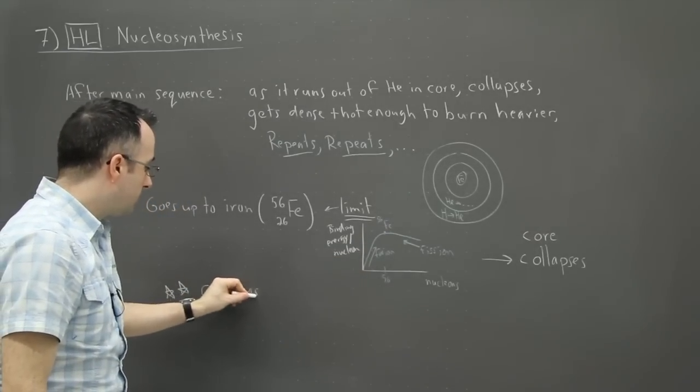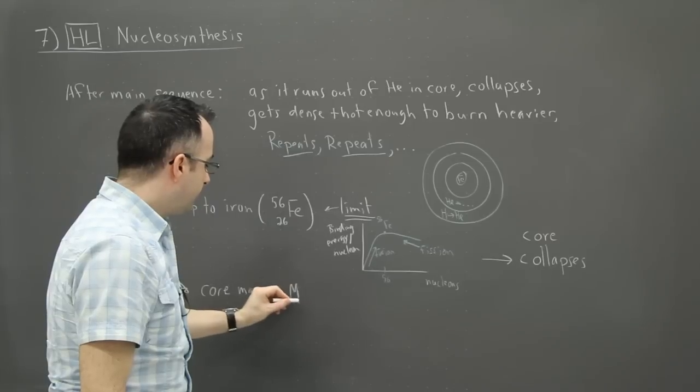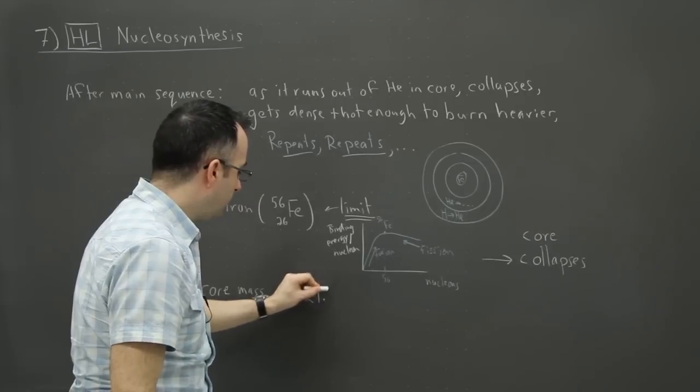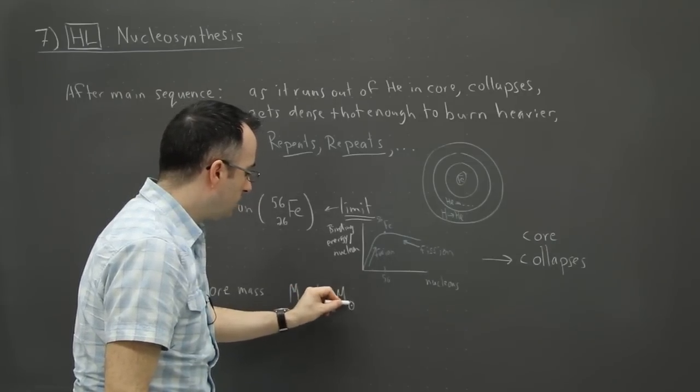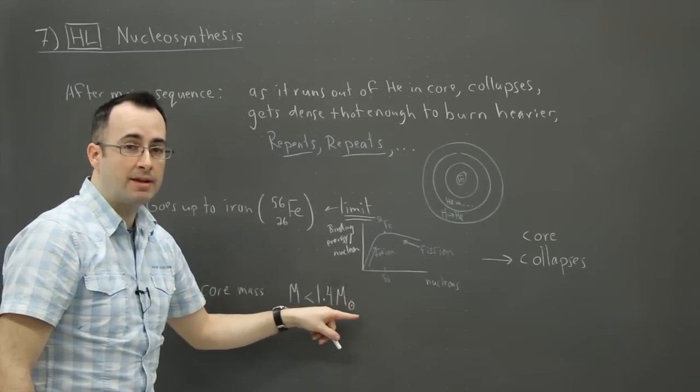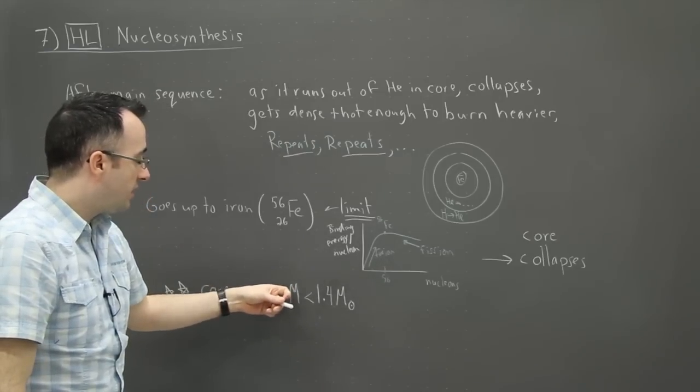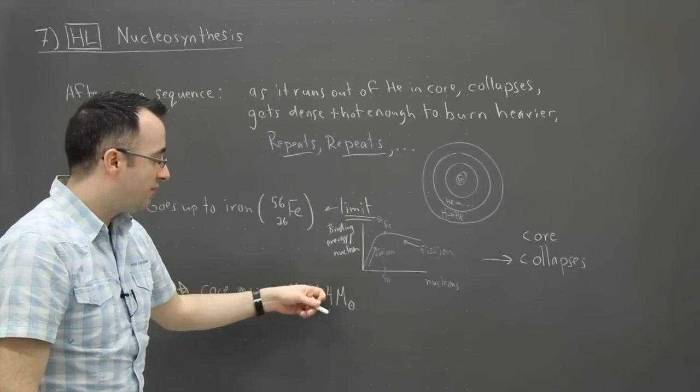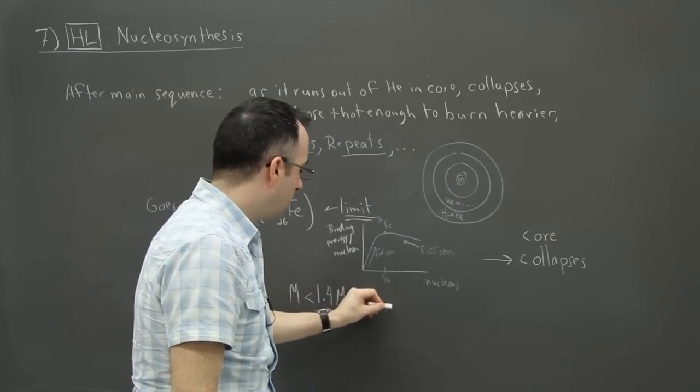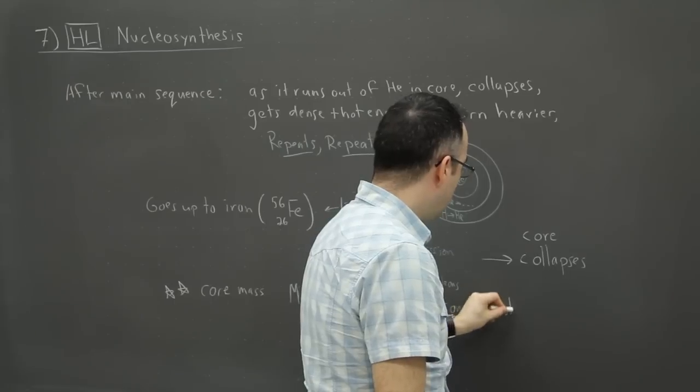So if the core mass, we'll say if M is less than 1.4 times the current mass of the Sun, then this is the magic number actually here, it's 1.4 solar masses. And we normally write like this. We normally say M with a little circle with a dot in the middle. That actually means solar masses. So what this means is if the core, if the leftover, what's remaining in the core here, if that mass is less than 1.4 times the current mass of the Sun, then it becomes a white dwarf and dies.